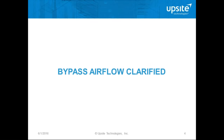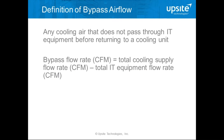One of the most fundamental concepts is bypass airflow. It's widely known but not widely understood. The definition is simply any air that comes out of a cooling unit that does not pass through IT equipment before returning to a cooling unit is bypass airflow. A lot of people think that by installing a blanking panel or sealing a cable opening they're affecting the bypass airflow — that might be true at the rack level, but it's not true at the room level.